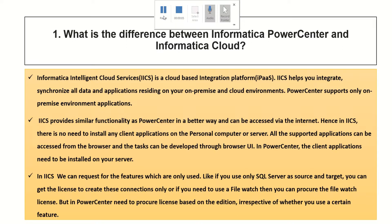The first question is what is the difference between Informatica Power Center and Informatica Cloud. Informatica Intelligent Cloud Services, or IACS, is a cloud-based integration platform — an iPaaS. IACS helps you integrate and synchronize all data and applications residing on your on-premise and cloud environments. But when it comes to Power Center, it only supports on-premise environment applications.